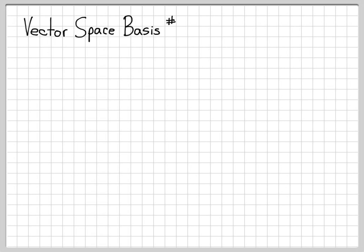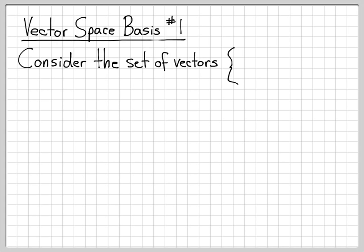In this example, we're going to work with a vector space, and we're actually going to find a basis for the vector space. That means any element from the vector space I can write as a linear combination of the basis vectors.